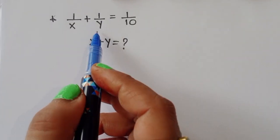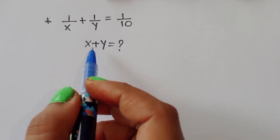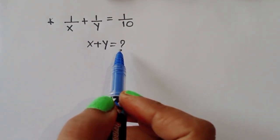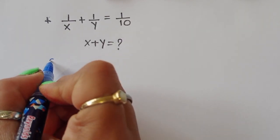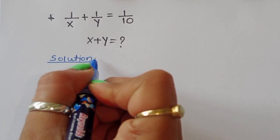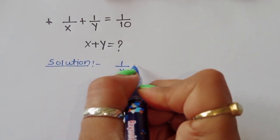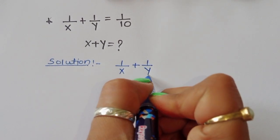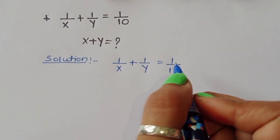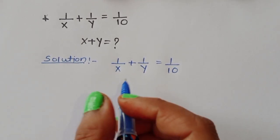Given 1 upon x plus 1 upon y is equal to 1 upon 10, we have to find the value of x and y, and at the same time find x plus y. Let's see how we can find the value of x plus y.